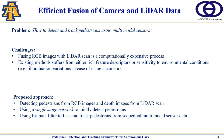To solve these problems, we propose a fusion mechanism using RGB images and depth images from LiDAR scans. We use a single-stage network to jointly detect pedestrians, and in our approach we also use a Kalman filter to fuse and track pedestrians from sequential multimodal sensor data.